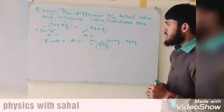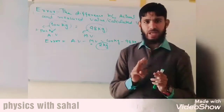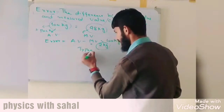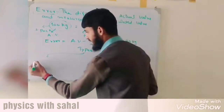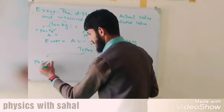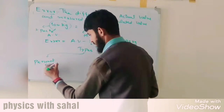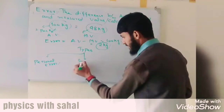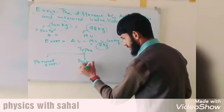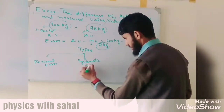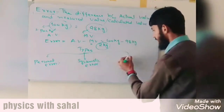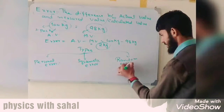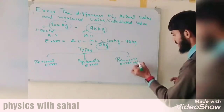There are mainly three types of error. The first is personal error, the second type is systematic error, and the third type is random error, which is also called statistical error.